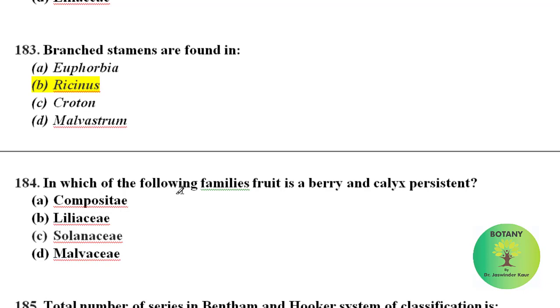In which of the following families is the fruit a berry and calyx persistent? Berry type of fruit and persistent calyx are characteristic of family Solanaceae.